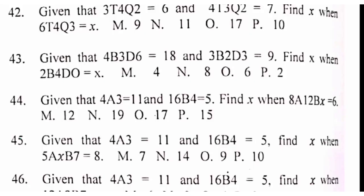Then, number 44 says, given that 4a3 is equal to 11, 16b4 is equal to 5, find x. When 8a12bx is equal to 6. So, in this particular question, I believe you see that it is going in line with the way the other one went. The first one here.